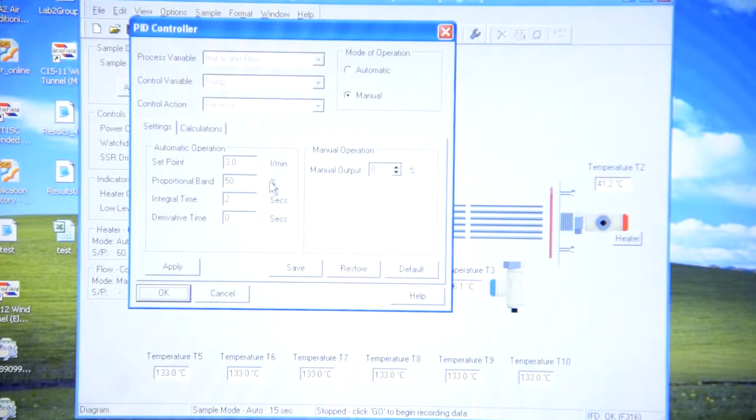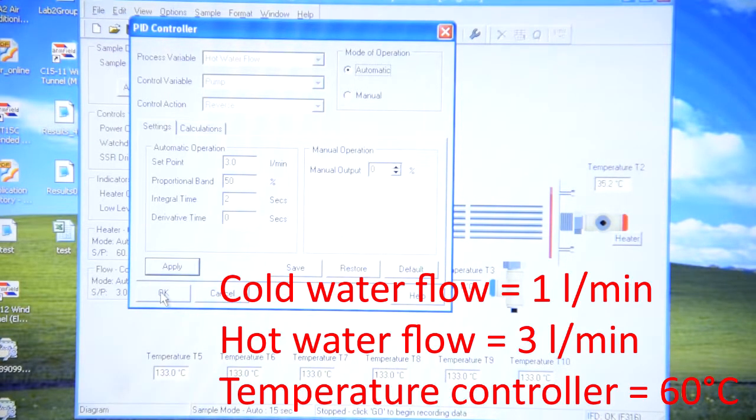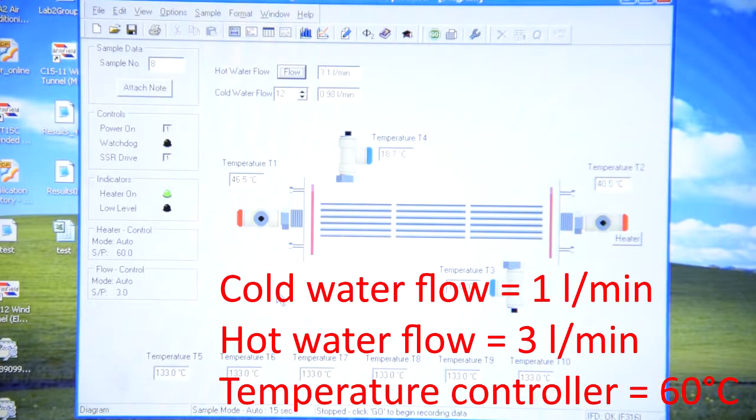Also, you should make hot water flow equal to 3 liters per minute and press automatic mode. You should hear that it works.